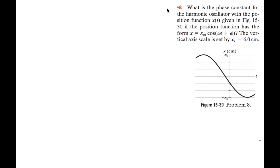Let's take a look at this problem. What is the phase constant for the harmonic oscillator with the position function x at t given in figure 15-30, if the position function has the form x equals xm multiplied by cosine of omega t plus phi?